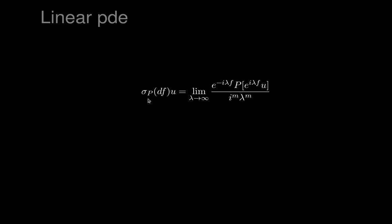The symbol, sigma, depends on U and on F. But importantly, it actually only depends on dF — not on F directly, but on its differential dF, or its gradient. You can see this is intuitively believable because if you added a constant to F, it would knock itself out. So it's not surprising and not difficult to prove that it really only depends on the differential of F. It's an operation that linearly transforms U by multiplying by something involving dF. M is the order of P as a differential operator.